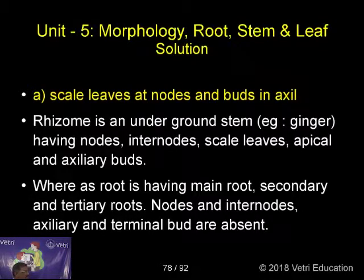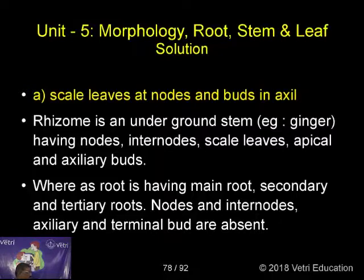Rhizome is an underground stem — example ginger — having nodes, internodes, scale leaves, apical and axillary buds. Whereas root has a main root, secondary and tertiary roots. Nodes and internodes and axillary buds are present, but terminal buds are absent.